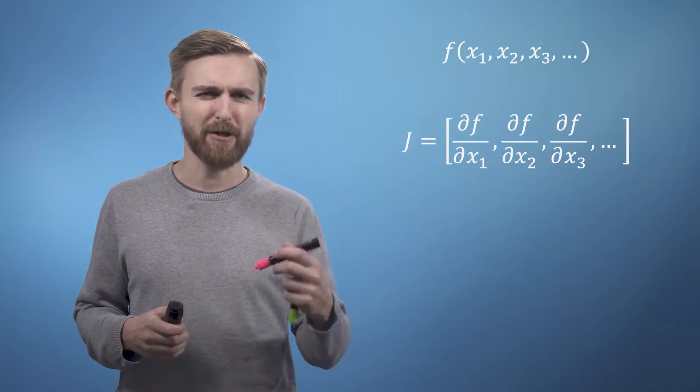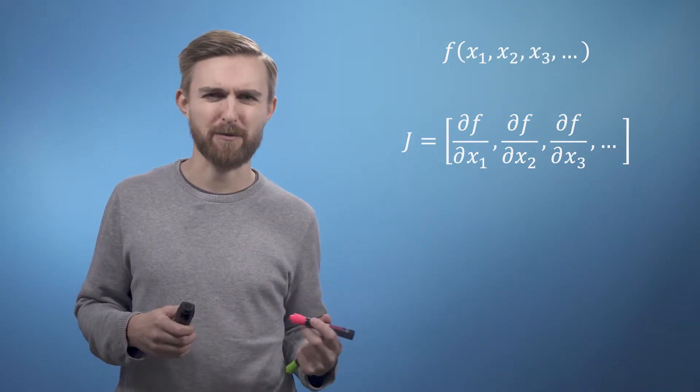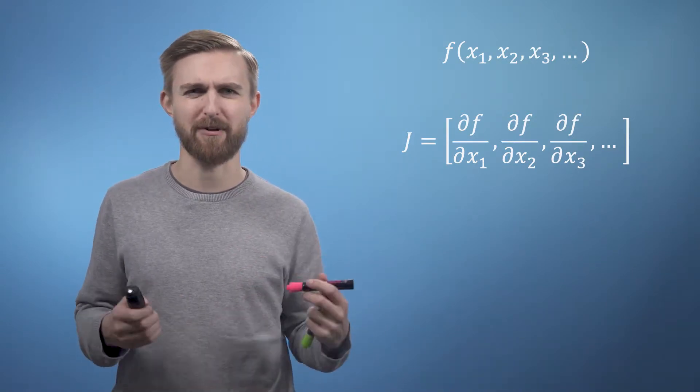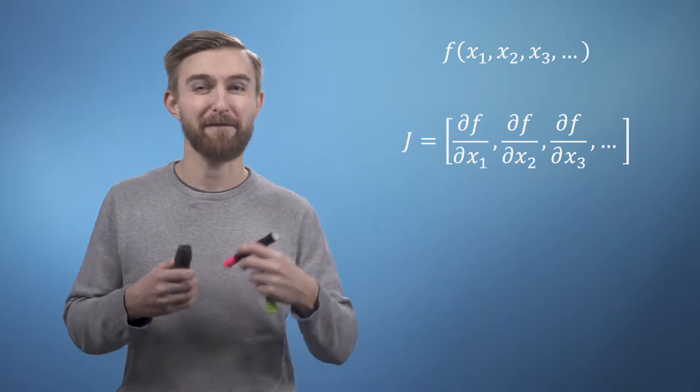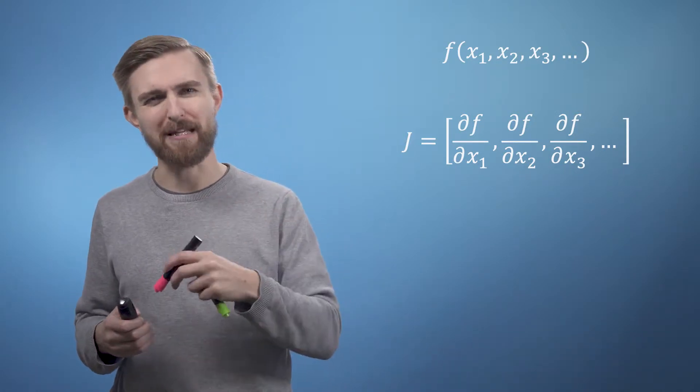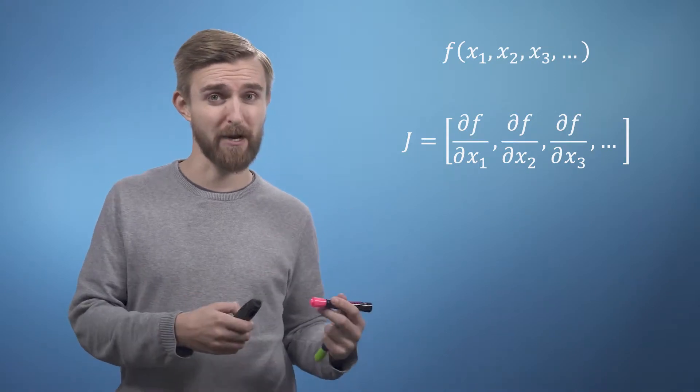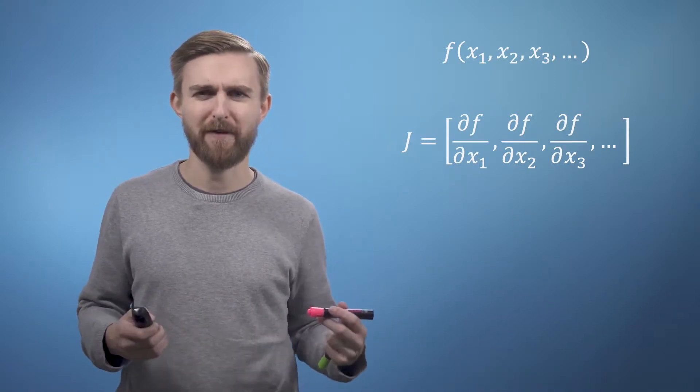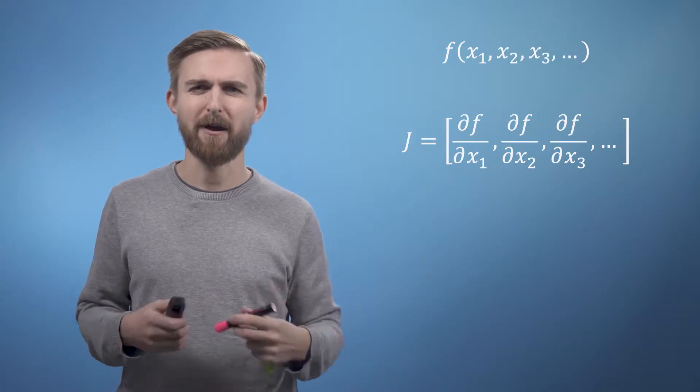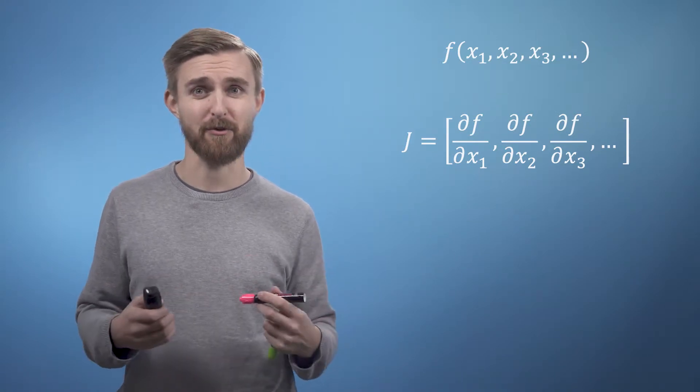In short, if you have a function of many variables, so f of x₁, x₂, x₃, etc., then the Jacobian is simply a vector where each entry is the partial derivative of f with respect to each one of those variables in turn. By convention, we write this as a row vector rather than a column vector, for reasons that will become clear later in the course.